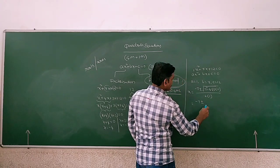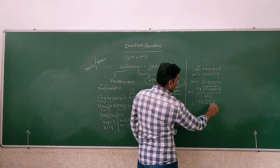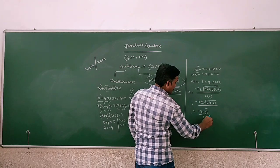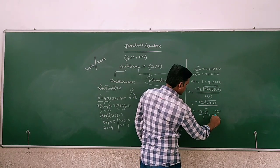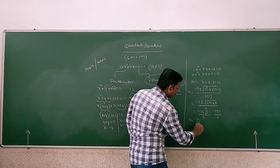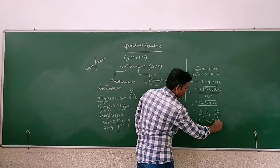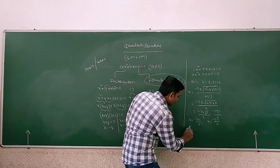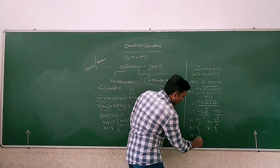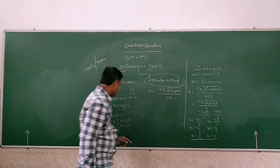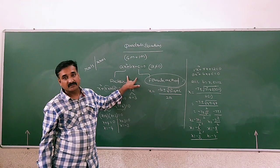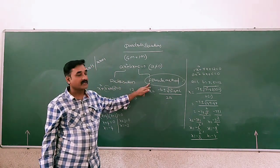So that gives minus 7 plus or minus root of (49 minus 48) divided by 2, which is minus 7 plus or minus root 1, divided by 2, which is minus 7 plus or minus 1 divided by 2. So we have two cases: x equals to (minus 7 plus 1) by 2, giving minus 6 by 2, so x equals minus 3; and x equals to (minus 7 minus 1) by 2, giving minus 8 by 2, so x equals minus 4. We see in both cases we got the same solution. So we can solve the quadratic equation in two ways — factorization method and formula method.